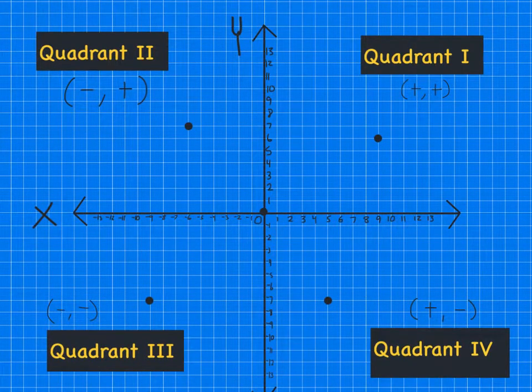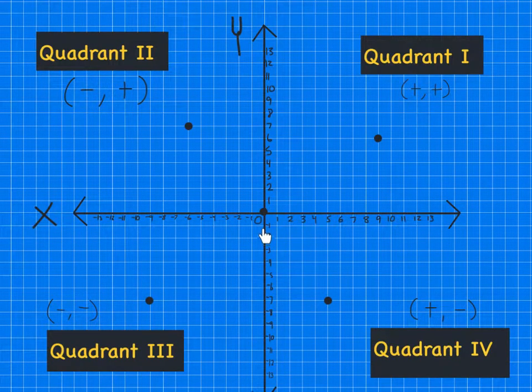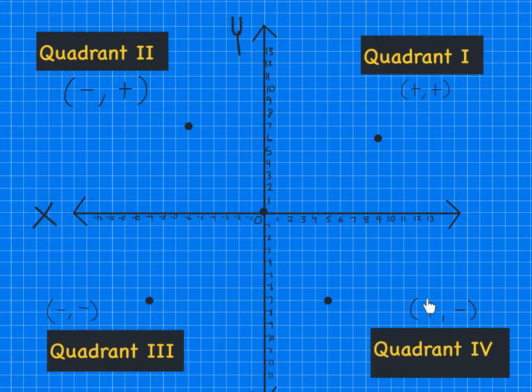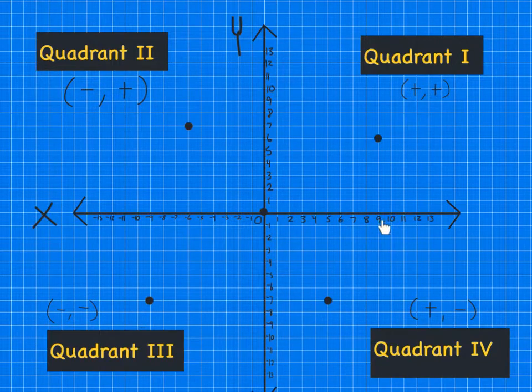So you can see that all of our points in quadrant one will be positive and positive. All our points in quadrant two will be negative x, positive y. And then all our points in quadrant three will be negative, negative. And all our points in quadrant four will be positive, negative. So that's how the x and the y relate to each other in a four-quadrant coordinate plane according to the four-quadrants.